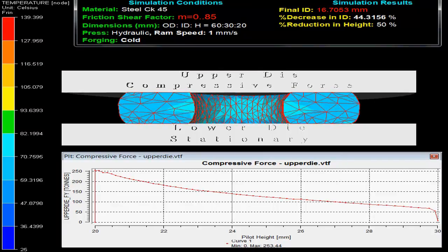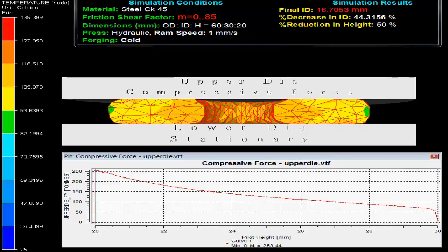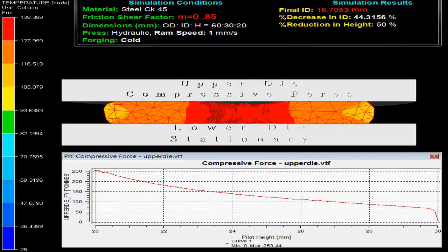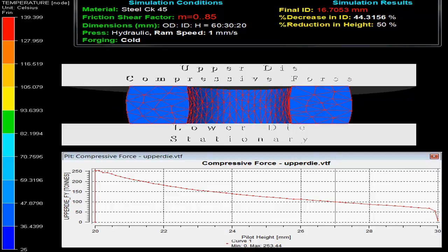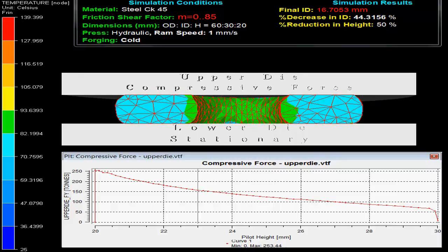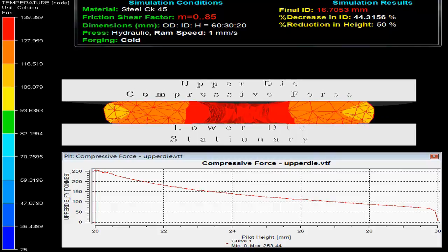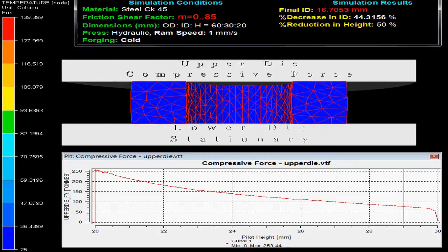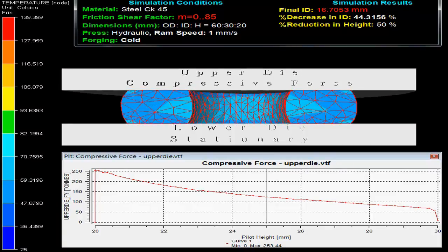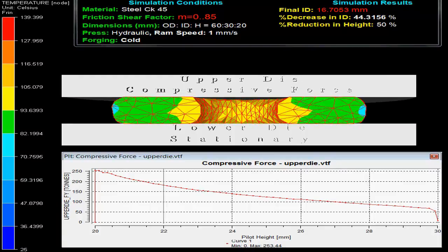On the top left corner in the video one can observe the simulation conditions. The specimen material is steel with friction shear factor M as 0.85, with initial outer diameter to inner diameter to height ratio 60:30:20.